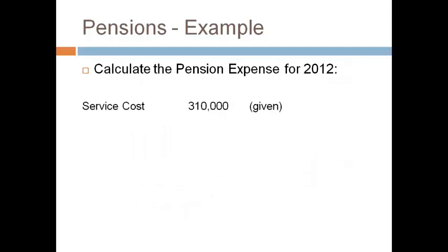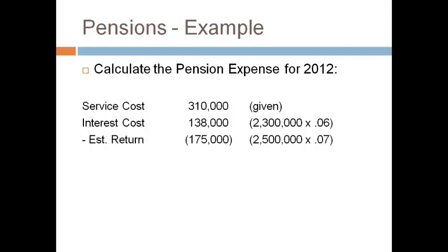Pension expense consists of six different pieces. The cost of employees working one more year — the service cost — is computed by the actuary. Interest is the same amount as was computed in the PBO walk-forward: beginning PBO times the discount rate. The estimated return is computed as the beginning fair market value of plan assets times the estimated return percent. There is a loss on prior service costs from changes to the plan in prior years that is sitting in OCI. A portion of this must move out of OCI and into pension expense each year. The total unrecognized amount divided by the service life is the amount added to pension expense.